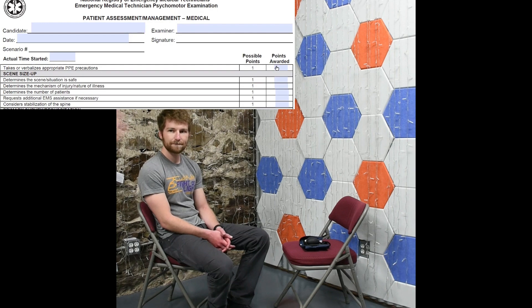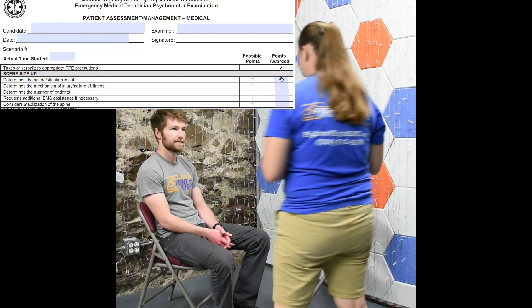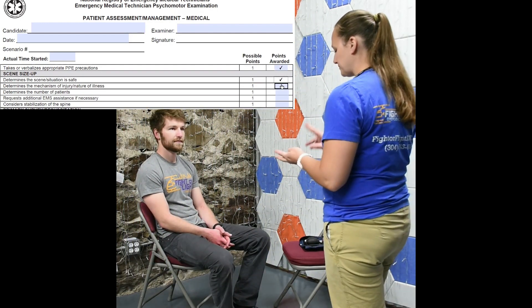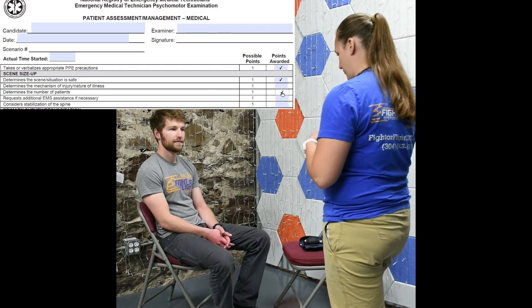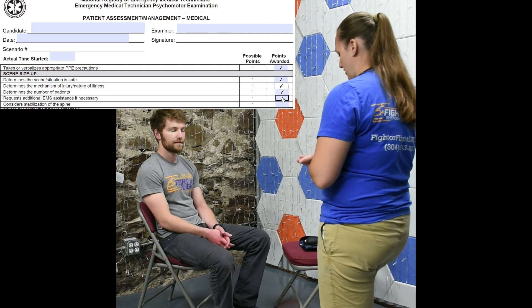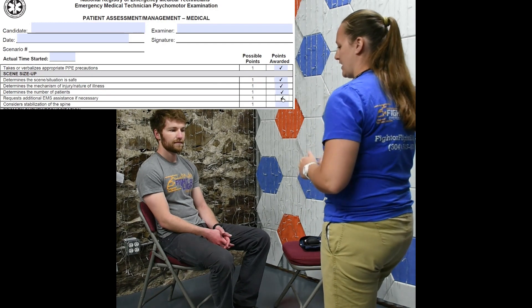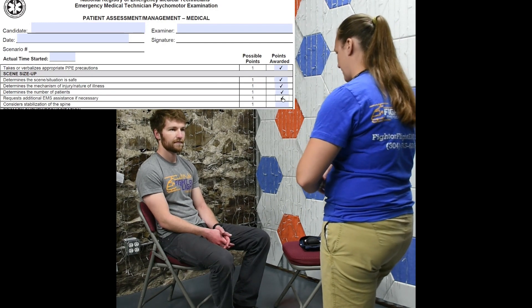You are called to the scene of a residential home where a 45-year-old man is complaining of severe abdominal pain. I have my PPE on. The scene is safe. Looks like I have one patient. My NOI is severe abdominal pain. I'm going to consider calling for ALS, and I don't think I need C-spine at this time.